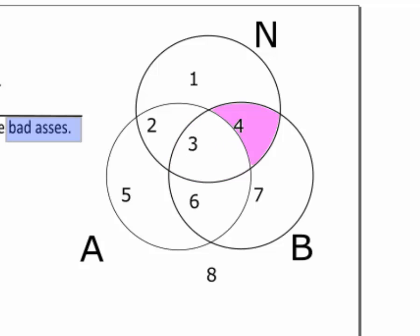Now, for Region 4, see if you can predict what it represents. It's in the intersection of ninjas and badasses, so you might have said ninja badasses.